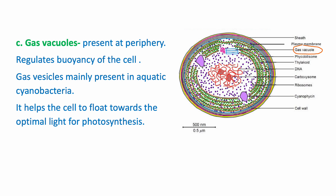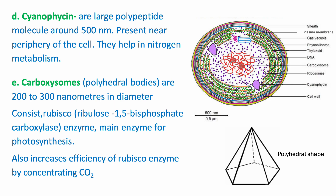Gas vacuoles: these are gas-filled, rod-like vesicles present at the periphery which regulate the buoyancy of the cell. Buoyancy refers to the tendency of a submerged object in liquid to float and rise. Due to the presence of gas vacuoles, the cyanobacterial cell does not sink into water; instead it floats on the surface, providing optimal light for photosynthesis. Gas vacuoles are mainly present in aquatic cyanobacteria.